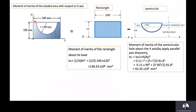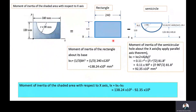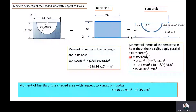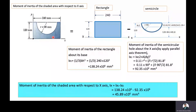Now we will find the moment of inertia of the shaded region about the x-axis by subtracting the moment of inertia of the semicircle (ix2) from the moment of inertia of the rectangle (ix1) about the x-axis. After substituting ix1 and ix2 values, ix = 45.89 × 10⁶ mm⁴. That is, the moment of inertia of the shaded region about the x-axis is 45.89 × 10⁶ mm⁴. This is the required answer for the given problem.